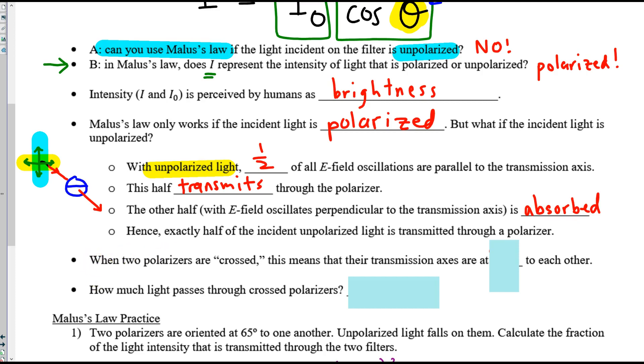If you take two polaroids, or polarizing filters, and you cross them, that means their transmission axes are at 90 degrees to each other. And if you have a scenario with, say, maybe a horizontally polarized filter, followed by a vertically polarized, how much light can make it through? The answer is none. This filter blocks anything that's oscillating vertically. This filter blocks anything oscillating horizontally, and so nothing can make it out.